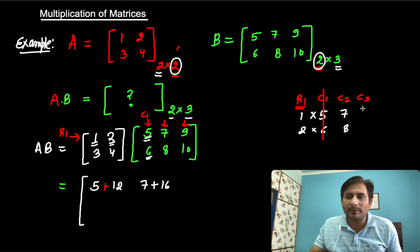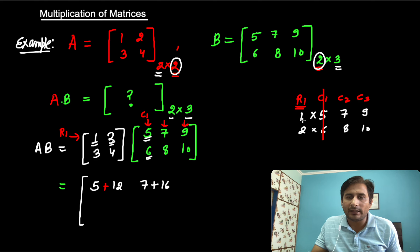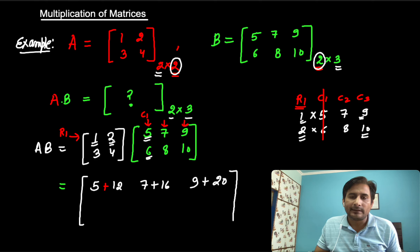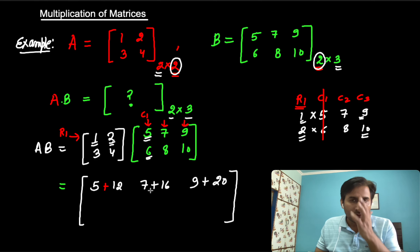Now we need to multiply row 1 with the third column, which is 9 and 10. So 1×9 = 9, then plus 2×10 = 20. So 9+20 = 29. All the columns are finished now.